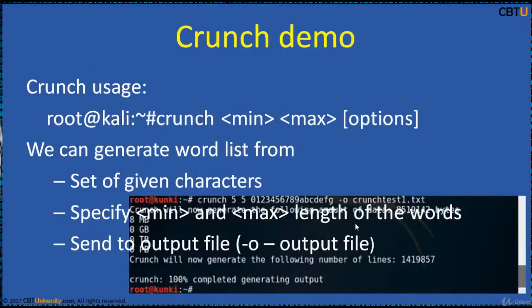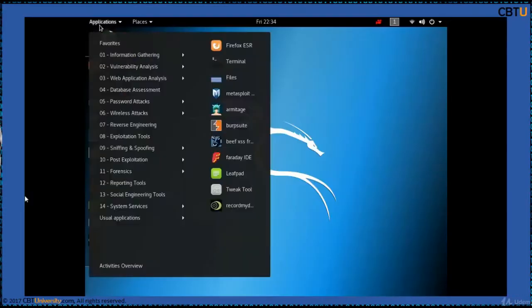With Crunch, we can generate wordlists from a set of given characters, specify minimum and maximum length of the words, and send the output to a file to be used for password cracking. Let us dive into the Crunch demo.